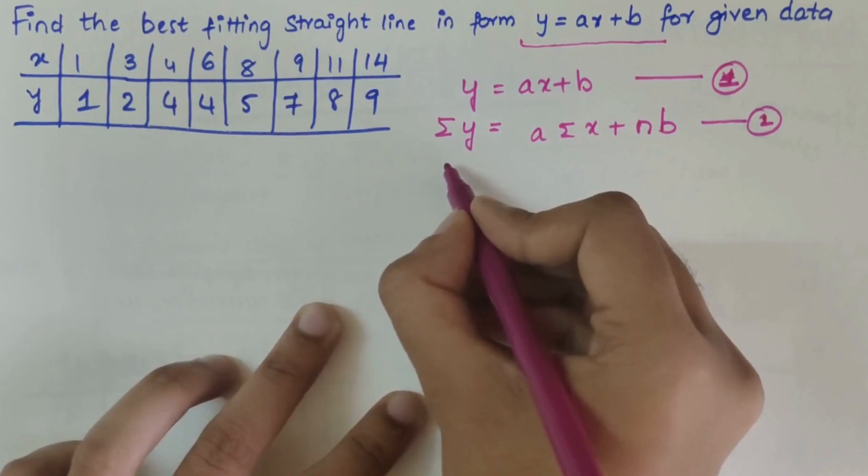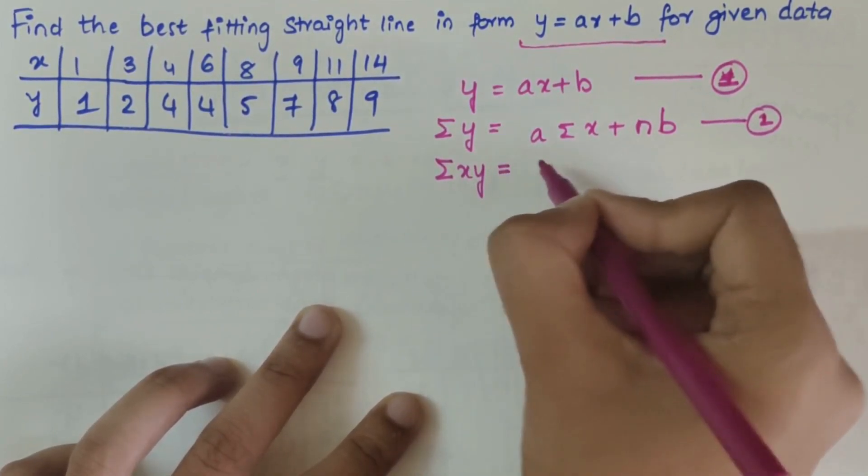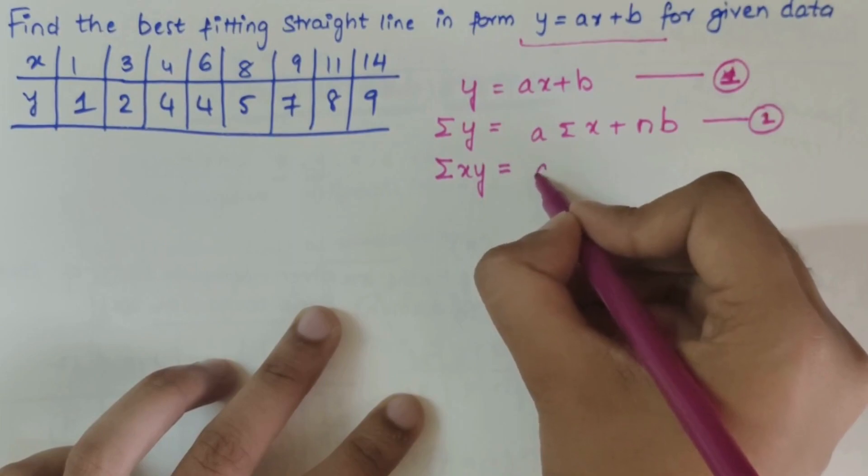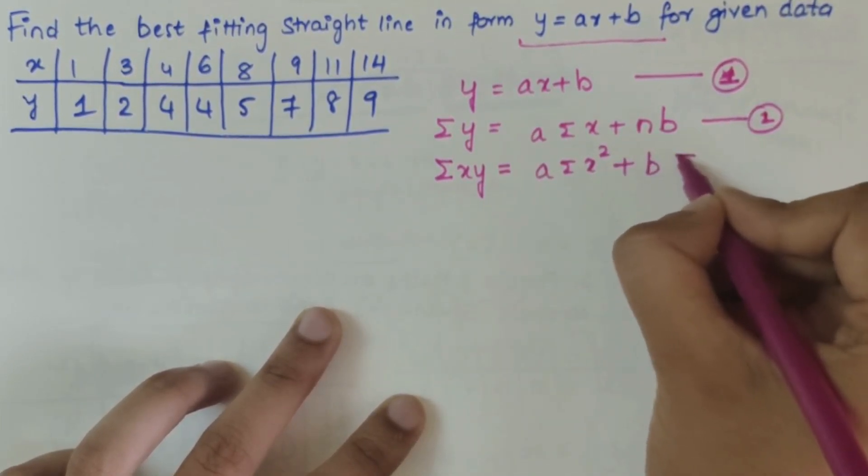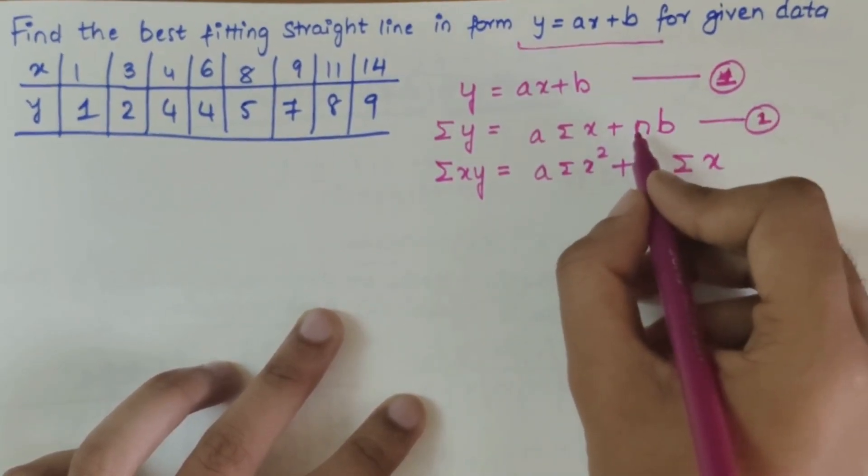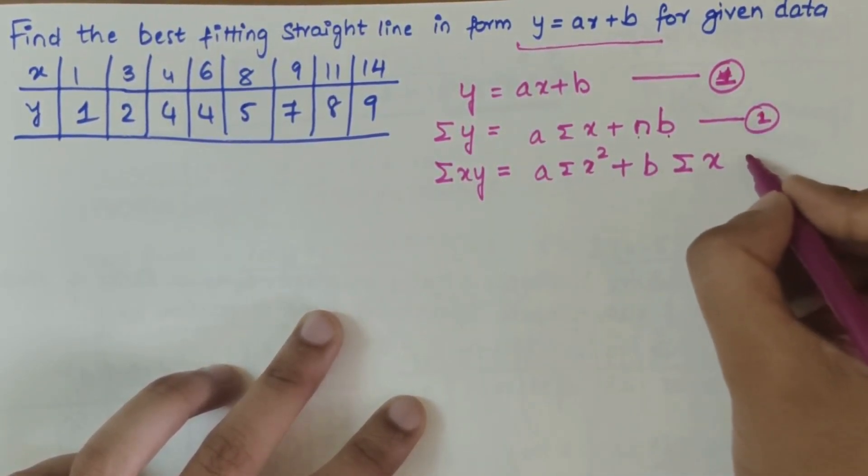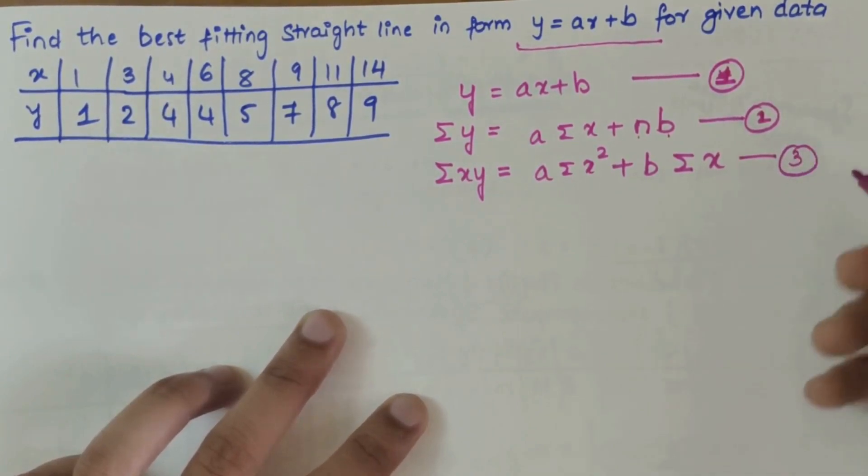Again now multiply x on both sides. So summation xy equals a summation x square plus b summation x. When you multiply x with nb it becomes summation x. This is our third equation.